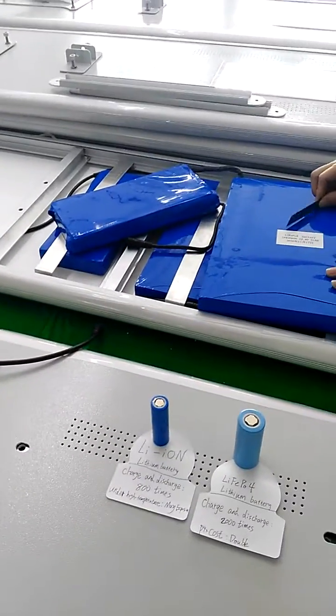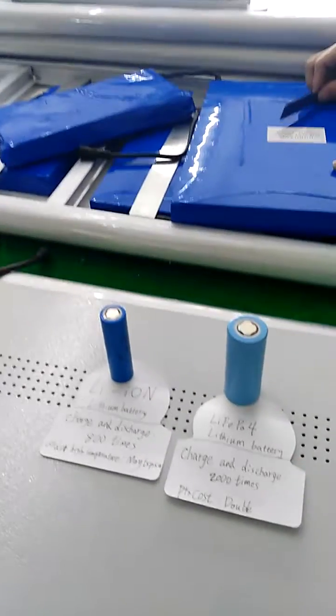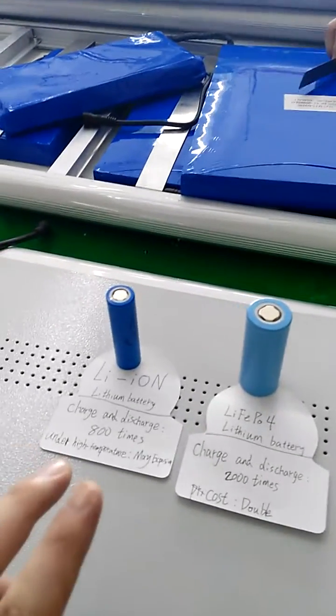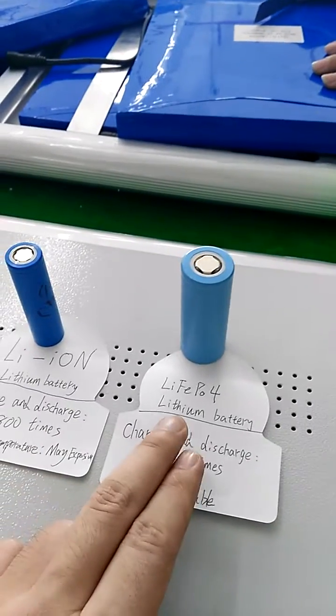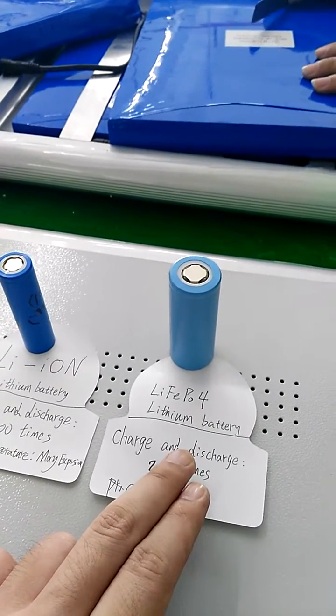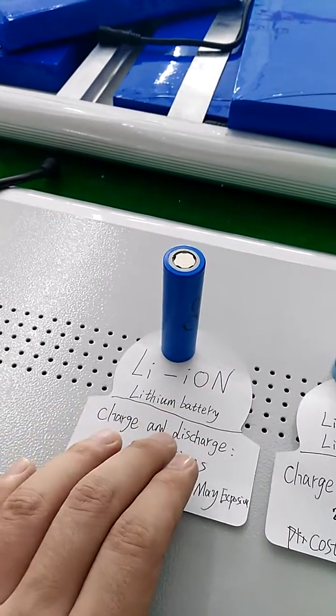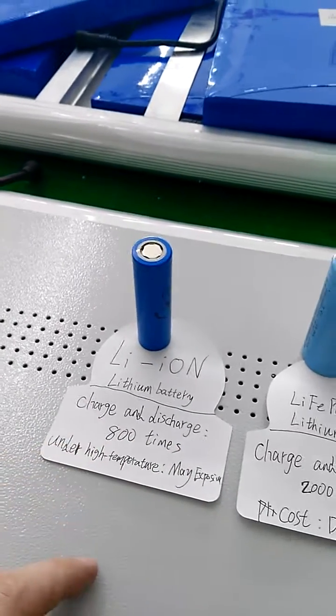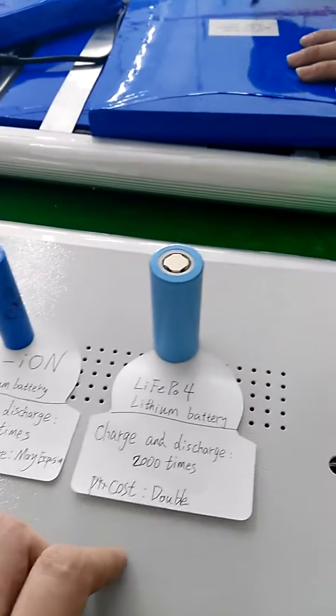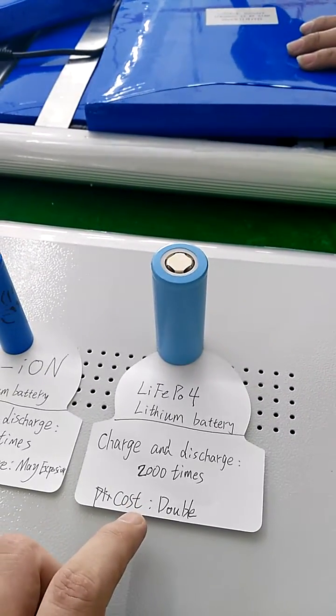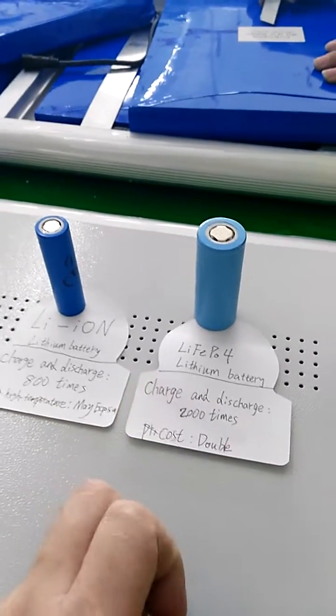As you know, we use a lithium battery, but the lithium battery has two kinds. One is the Li-ion which is cheaper, and the other is LiFePO4 which is more expensive, but we use the better one. Li-ion lithium battery charge and discharge time is only 800 times, and under high temperature it may explode - it's a little dangerous. LiFePO4 lithium battery charge and discharge time is 2000 times.